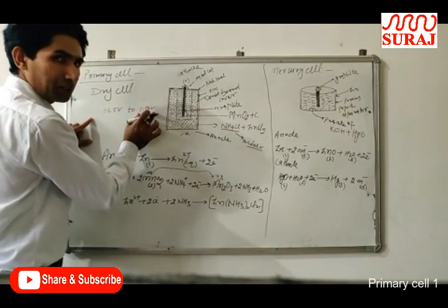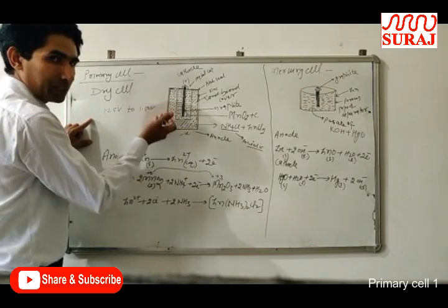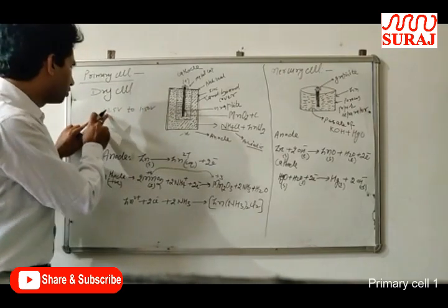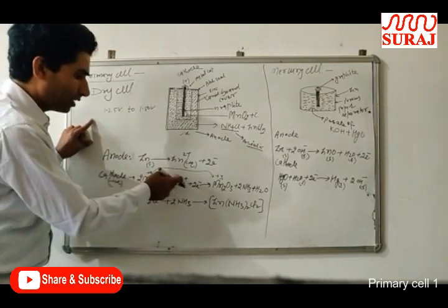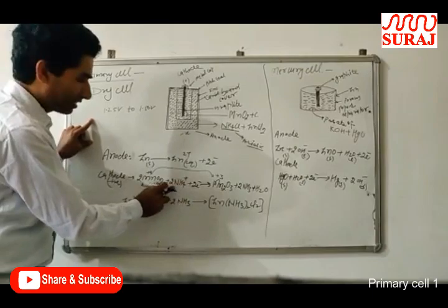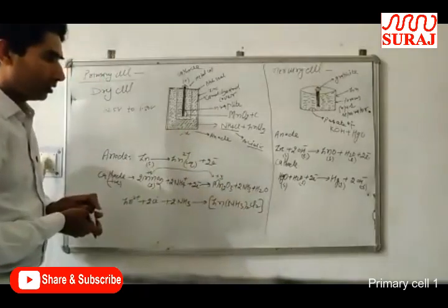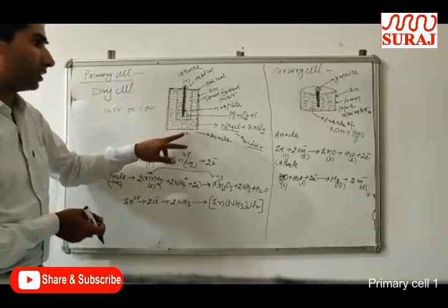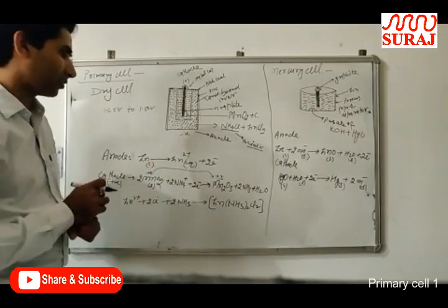Initially the cell gives around 1.50 volts, but as the cell operates, the potential drops to 1.25 volts because the electrolyte in the cell decreases and NH₄⁺ ions change into NH₃. So that is the dry cell — its construction and the reactions occurring at the anode and cathode.